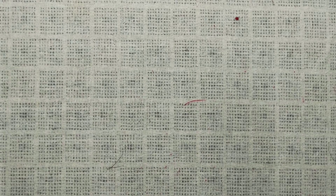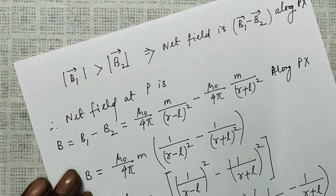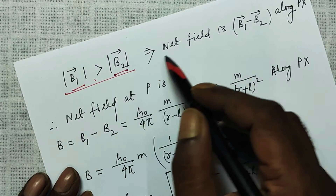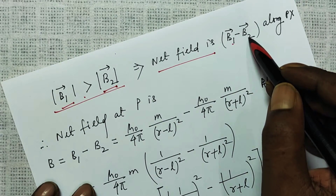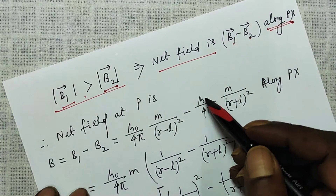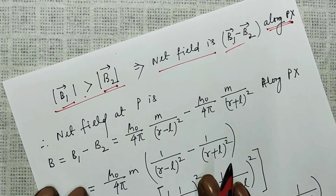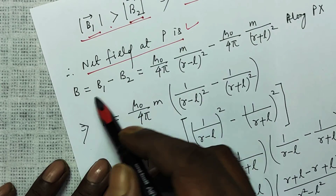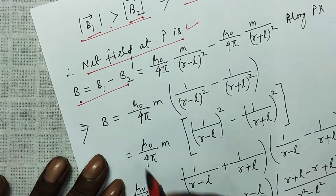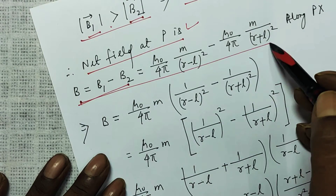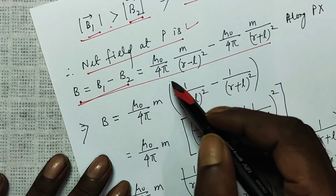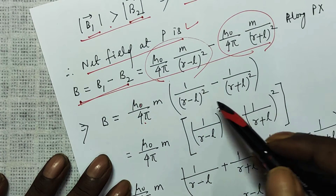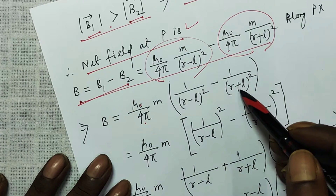The magnitude of B1 is greater than the magnitude of B2. Therefore the net field is B1 minus B2 and it will be along Px, means along the direction of B1, means along the direction of the magnetic moment M. So the net field at P is B = B1 minus B2. Here I am finding out the magnitude. B1 minus B2: mu naught over 4 pi times M is taken common, leaving 1 over (R minus L) squared minus 1 over (R plus L) squared.